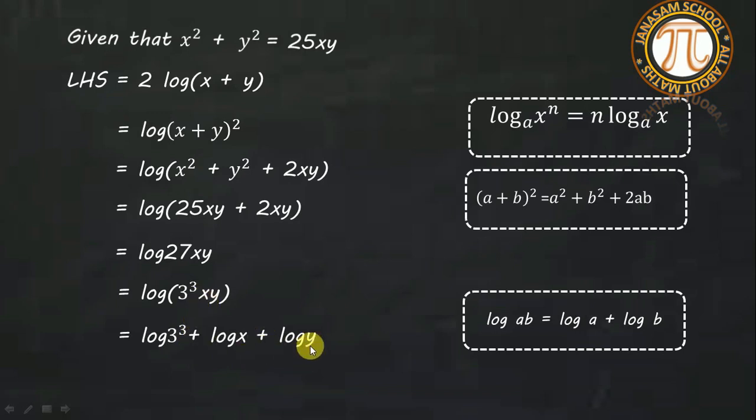Using the first formula, log x^n base a can be written as n log x base a. The power 3 becomes a coefficient in front. So 3 log 3 + log x + log y.